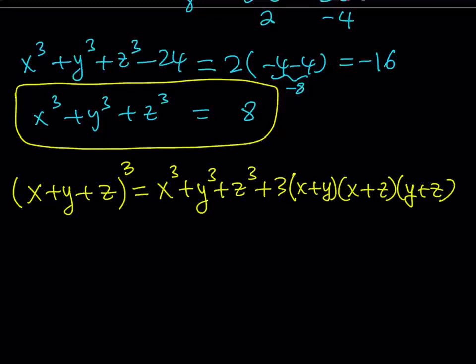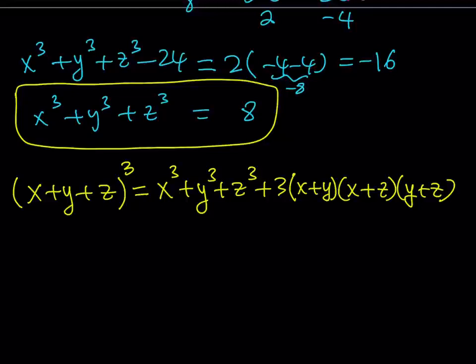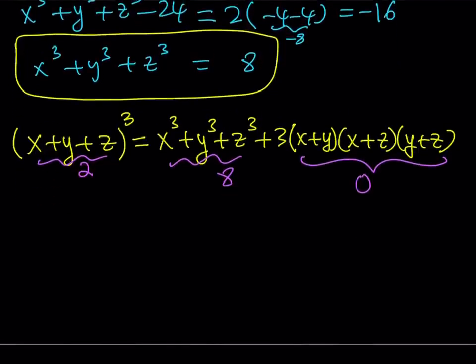What do we know about this? First, x cubed plus y cubed plus z cubed is equal to 8, and x plus y plus z is equal to 2, so if you cube the 2 you get 8. So you have 8 equals 8 plus something else, which means that something else is equal to 0. This is the beautiful part — we do get a product of 0.